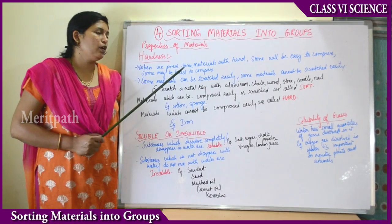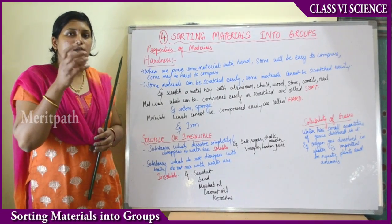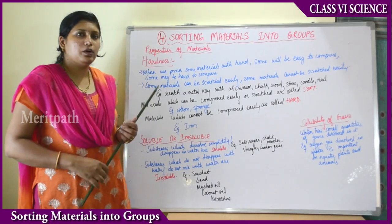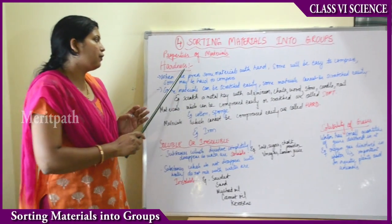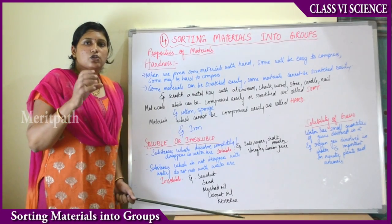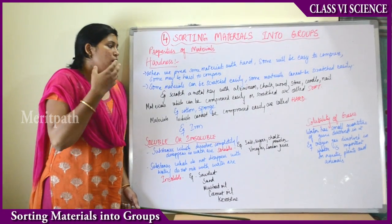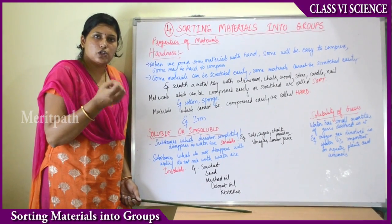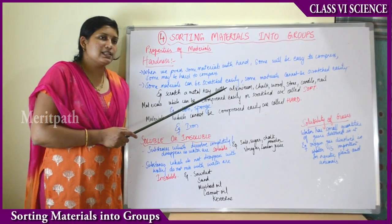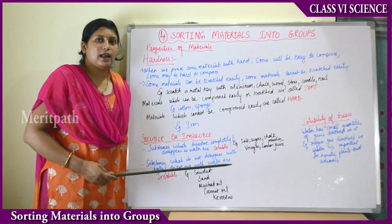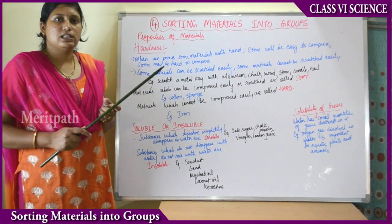The next property is hardness. If we press any material with our hand, some materials are easy to compress — they lose their shape and become soft — whereas some are hard to compress and do not change shape or size. Some materials can be scratched easily and some cannot. For example, if you take a metal key and scratch a chalk piece, you can scratch it easily.